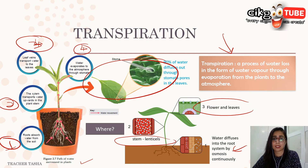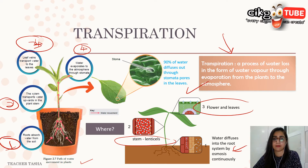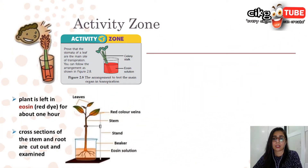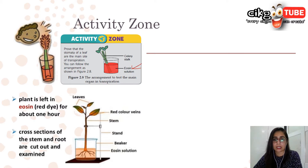Ninety percent of water diffuses out through the stomata pores in the leaves. There is an activity you can do to prove that stomata are the main site of transpiration: you can use eosin solution or any colored dye and a celery stalk.